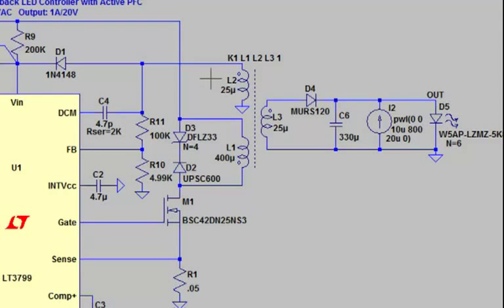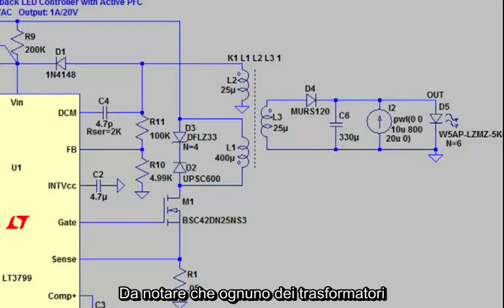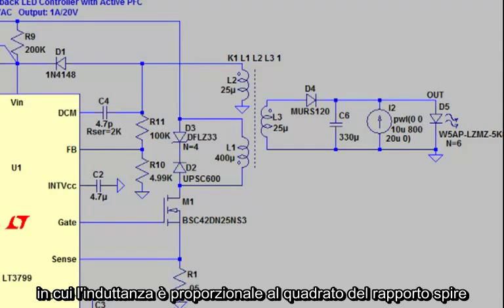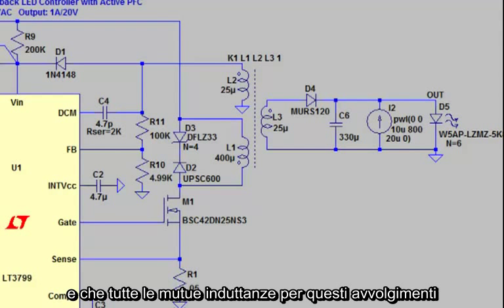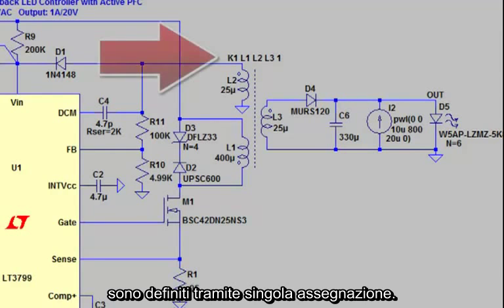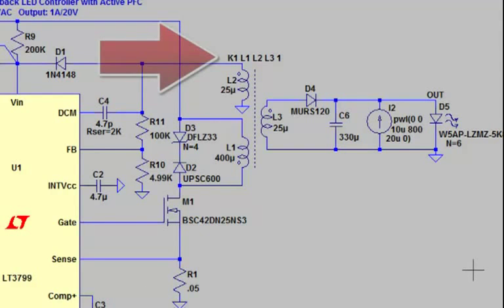Notice that each winding of the transformer is drawn using an individual inductor where the inductance is proportional to the square of the turns ratio. And that all the mutual inductances for these windings are all defined using a single simple K statement.